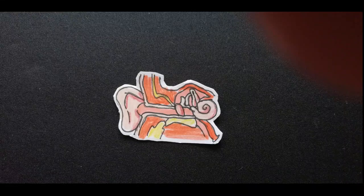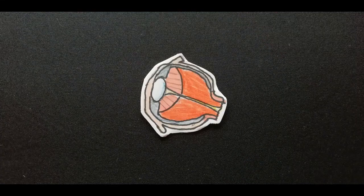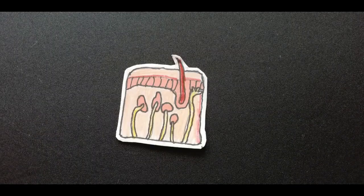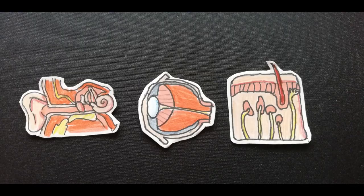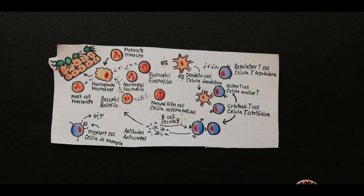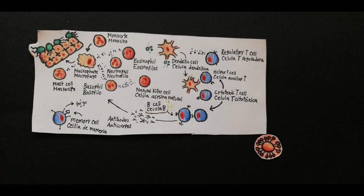Our senses, which are formed by our ear, eye, or skin, help us experience the outside world. And the immune system is a group of tissues and cells that fight infections to keep us alive.